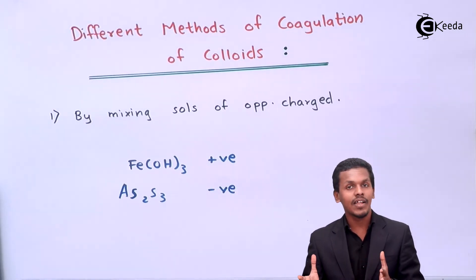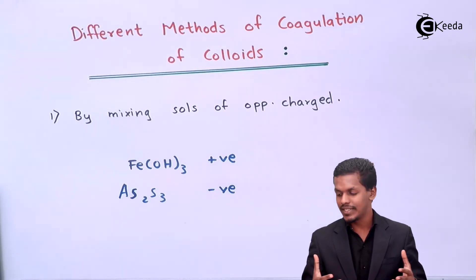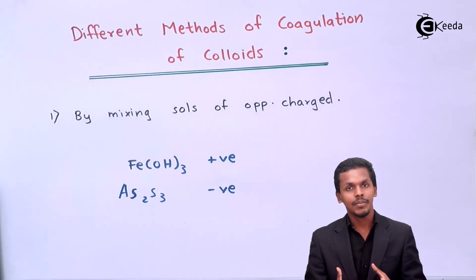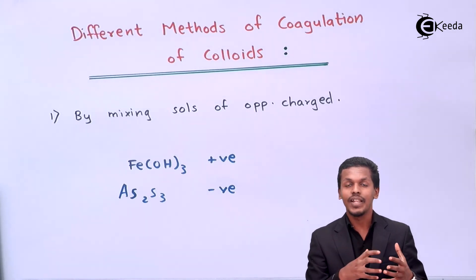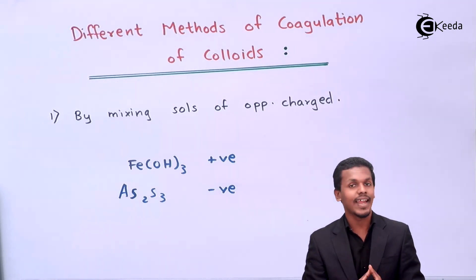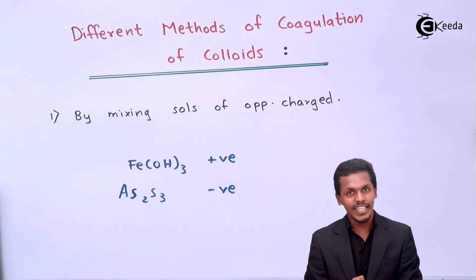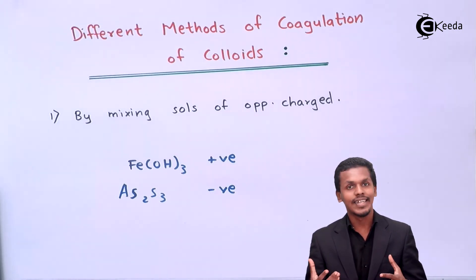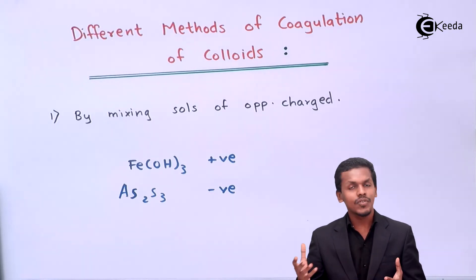Whenever these are mixed in an equal amount, since they are both of opposite charge, they will attract towards each other and neutralize. We could then see that the sols can get easily coagulated, and that is what causes the precipitation of the colloids. So this was the first method by which we can coagulate the colloidal particles.